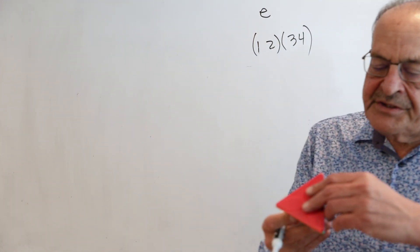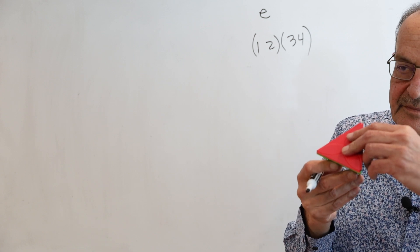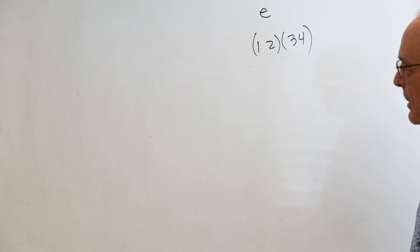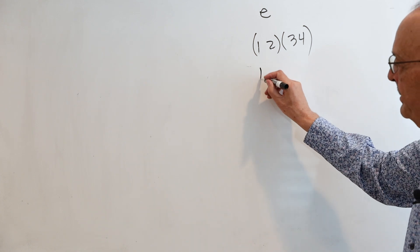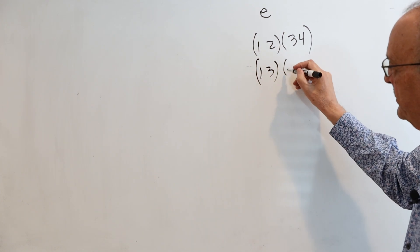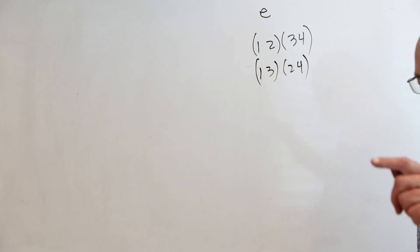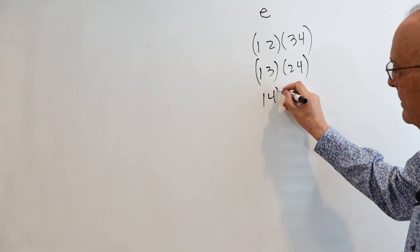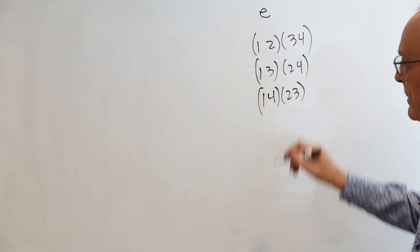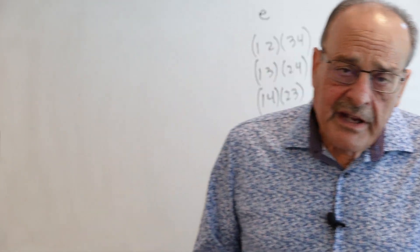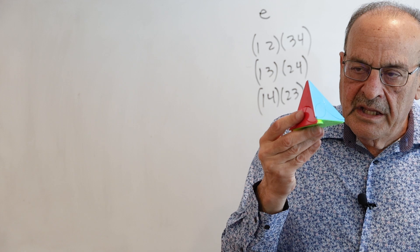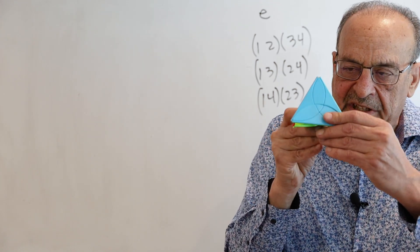So remember I said there were three pairs of edges that don't intersect. You could do another symmetry — another one of those same movements — and have one and three switch, and two and four switch. And you could do another one of those movements, and have one and four switch, and two and three switch. So basically, this tetrahedron is known to have twelve symmetries, where you do something to it and it gets back to where it might be rearranged, but it's going to be in the same physical space.